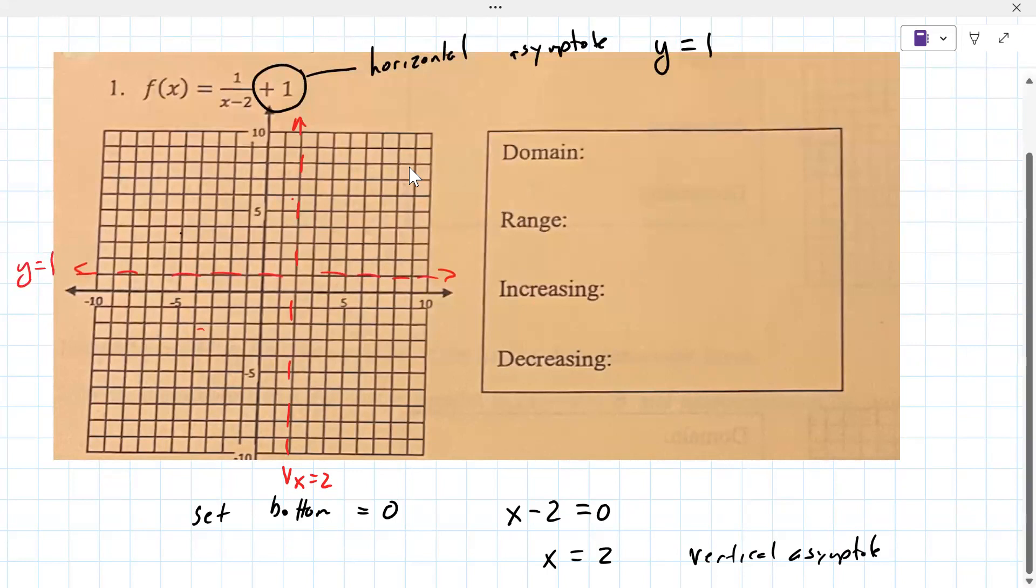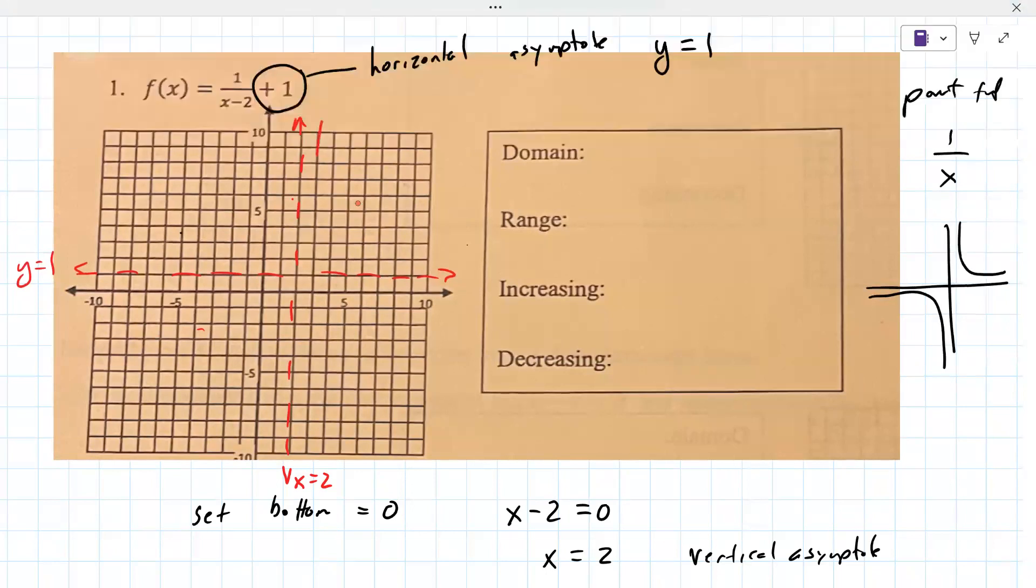We need to know what the shape of the graph looks like. The parent function for this is one over x, and the graph of one over x always looks like this. Based on what you said, I'm just going to draw on the parent function which means it'll look like that and like that. That's not accurate but that is approximately what it is.